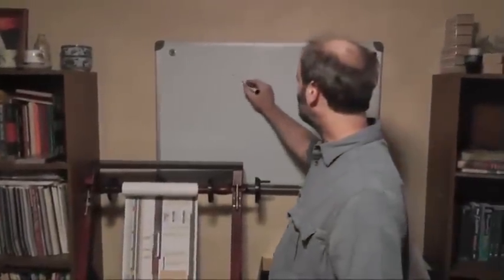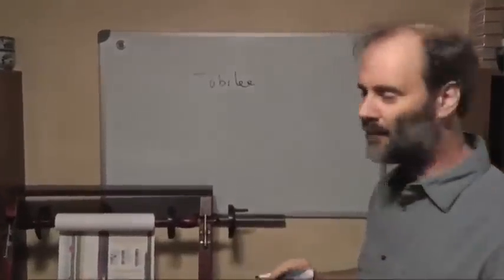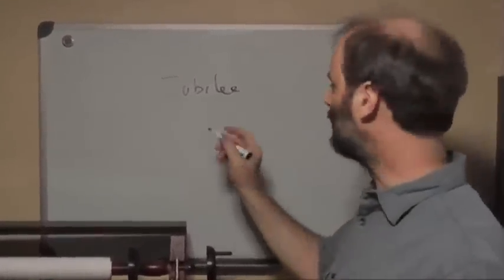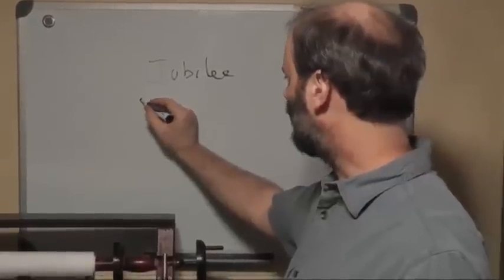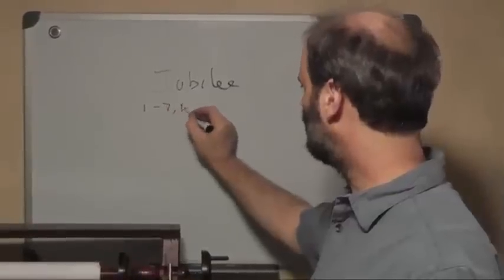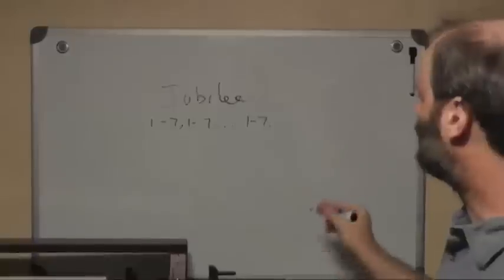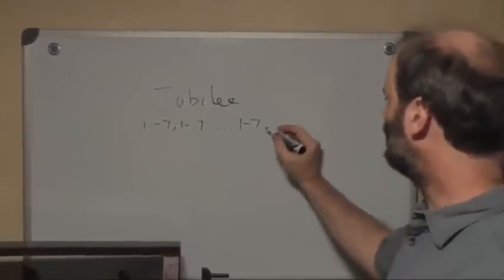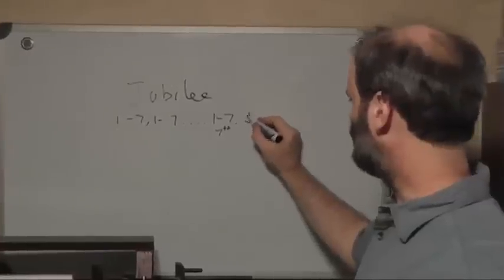Now there's one other institution I need to talk about. It's called the Jubilee. And what happened in the way the Jubilee was figured was that you would count off seven sabbatical periods, seven years, seven times, and so on. And then after the seventh sabbatical period, this would be the seventh sabbatical period, you had a year of Jubilee.